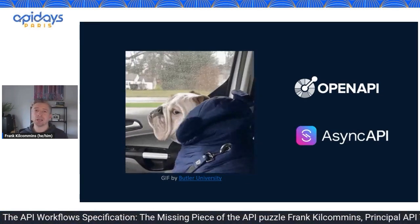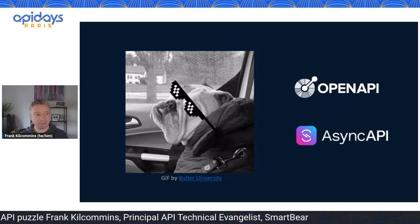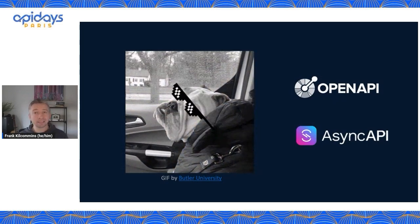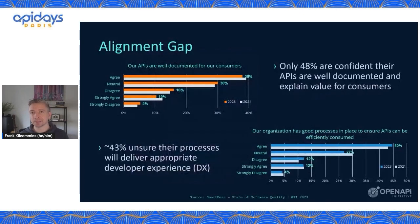You might say we're using well-known specifications like OpenAPI and AsyncAPI to document and design the different flavors of APIs that we're delivering. But what I would say is that even with this ability, the actual experience being delivered is subpar in many cases. We're seeing an alignment gap happening across the industry, and this is apparent to us in some of the research we do at SmartBear.